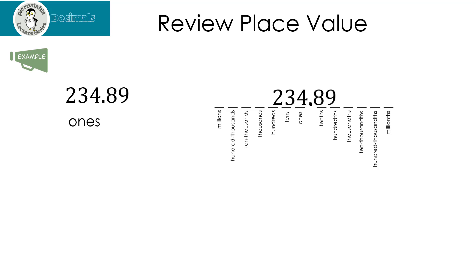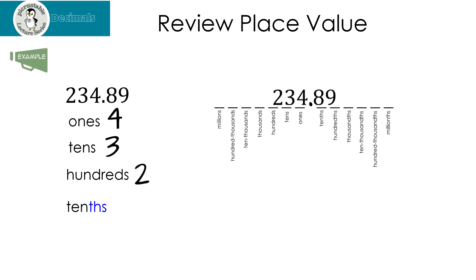What number is in the ones column? Well, that's the four. What number is in the tens column? That's the three. What number is in the hundreds column? That's two. What number is in the tenths column? Remember, anything with THS is after the decimal — it's to the right of the decimal. And that's my eight. And finally, what number is in the hundredths column? That's the nine. Do you remember how to pronounce this number? Two hundred thirty-four and eighty-nine hundredths.